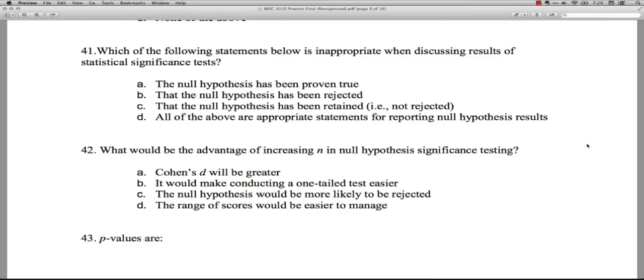Question 41: Which of the following statements below is inappropriate when discussing results of statistical significance tests? The null hypothesis has been proven true? Yeah, you can't prove the null hypothesis is true. A is correct. You can't prove that it's not true. You can say that the data are likely or have a relatively higher or lower probability if the null hypothesis is true, but you can't say that it has been proven true. B, that the null hypothesis has been rejected? You can reject the null hypothesis. You can say that given our sample data we see this is unlikely, so you reject it. C, that the null hypothesis has been retained? Yeah, you can say that if your sample value wasn't very extreme. And then all of the above? No, the only one that's inappropriate always is A, because you just can't prove that the null is true. You can simply say that you reject it because given your sample data it's not likely.